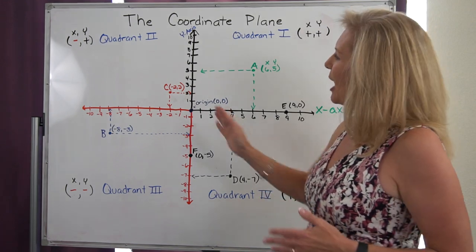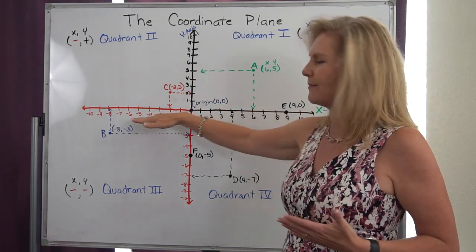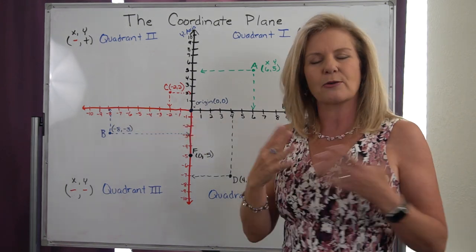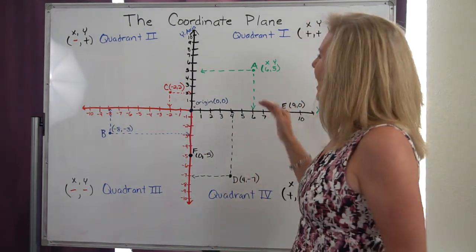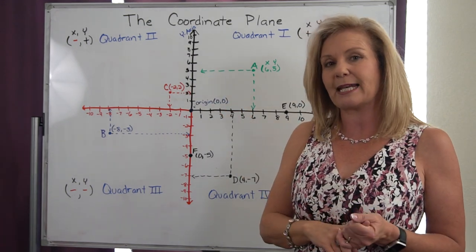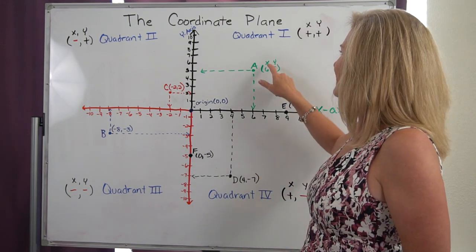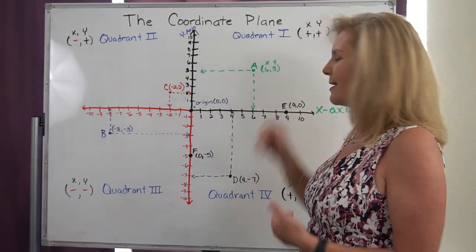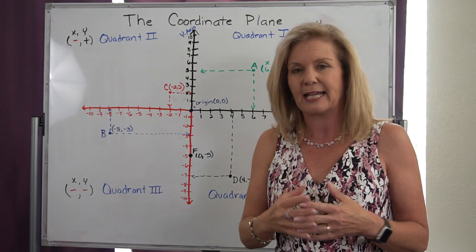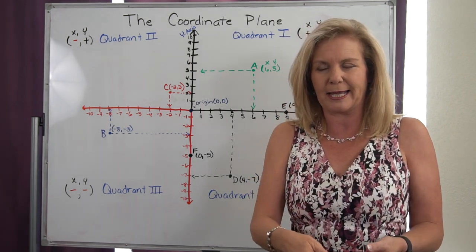Inside the quadrants, notice we have our positive and our negative numbers because those are our number lines. And so every location inside the quadrants can be represented by an ordered pair. That ordered pair is always an x-value represented first and a y-value represented second. It gives us that exact location on the coordinate plane.